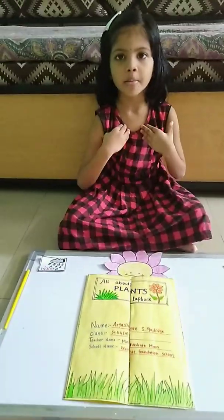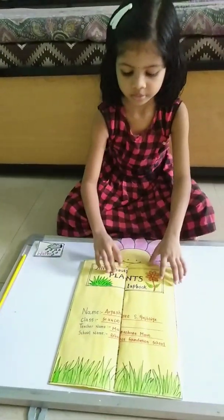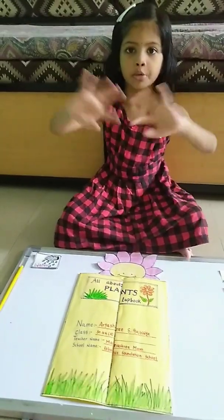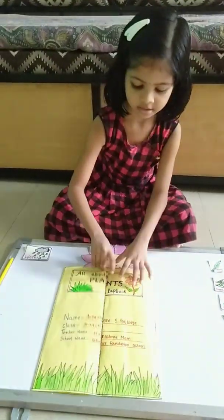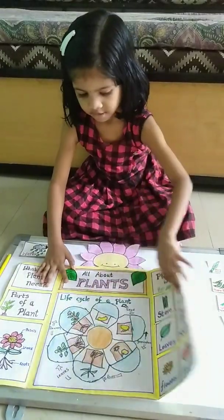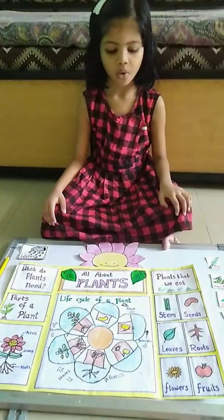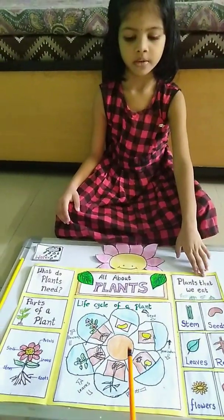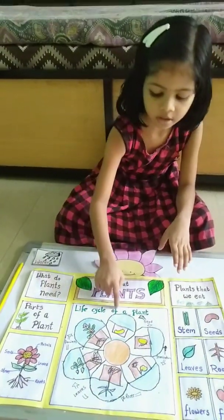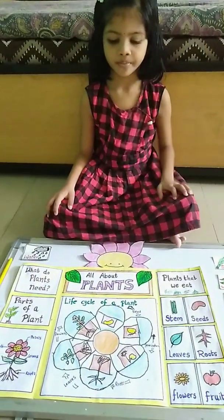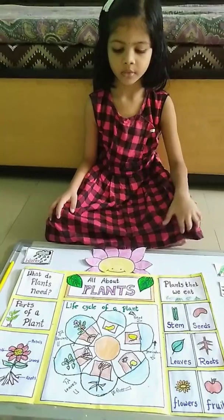What is this? This is my lab book. Okay, what is this about? It is about plants. Please open it. So you have drawn something here. What is this? Life cycle of plants. Can you please explain in short?